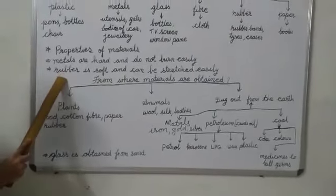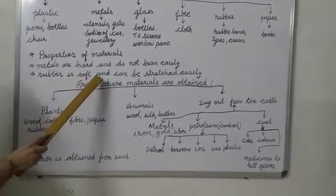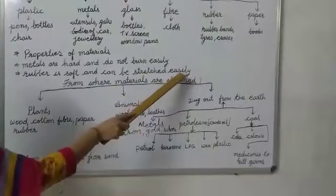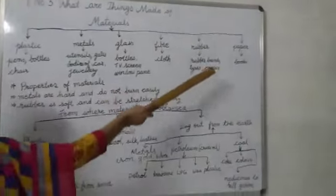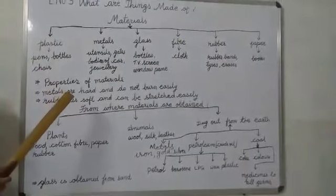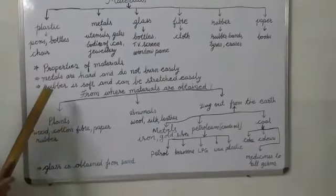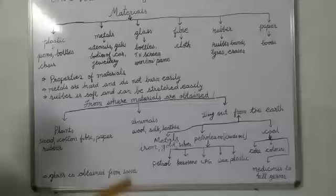Other material is rubber. It is soft and can be stretched easily. Like this, all these materials have their own property. Now, where do these materials are obtained?